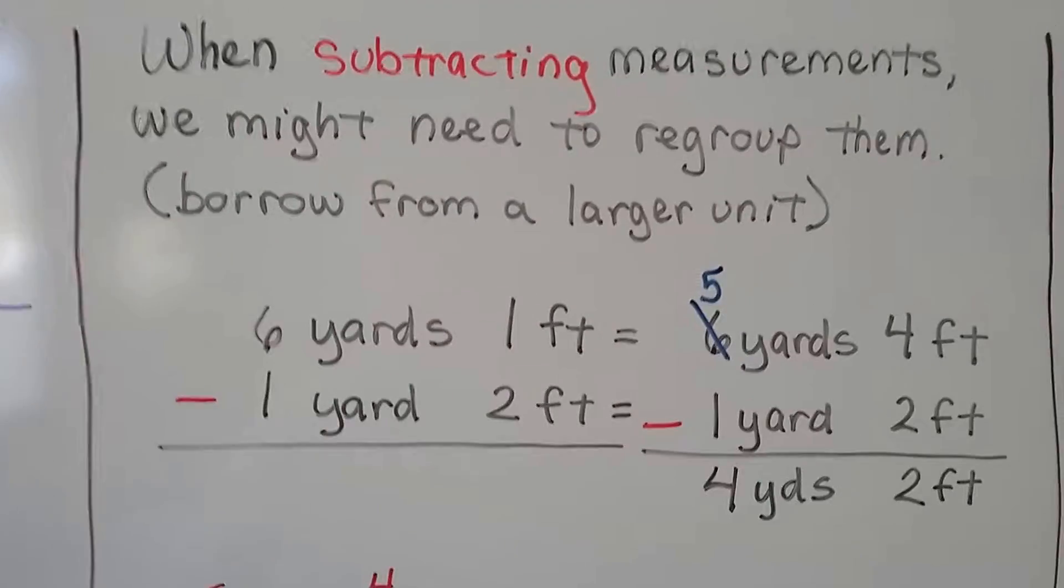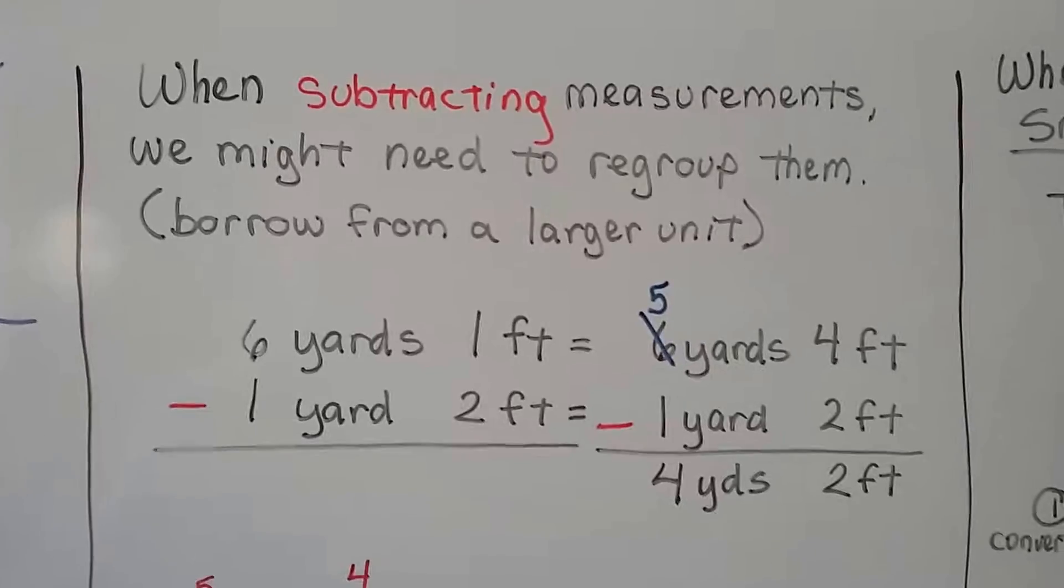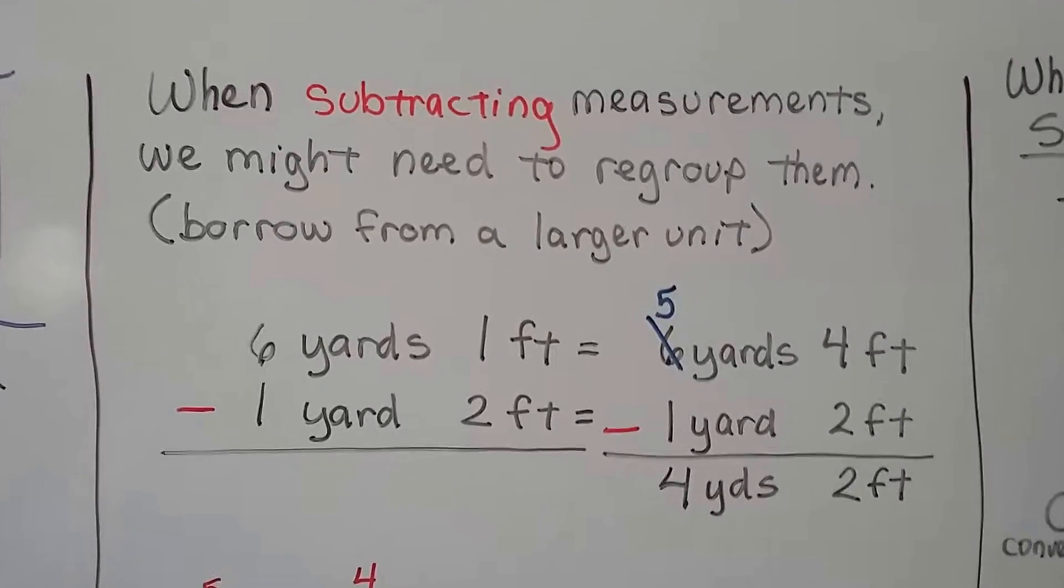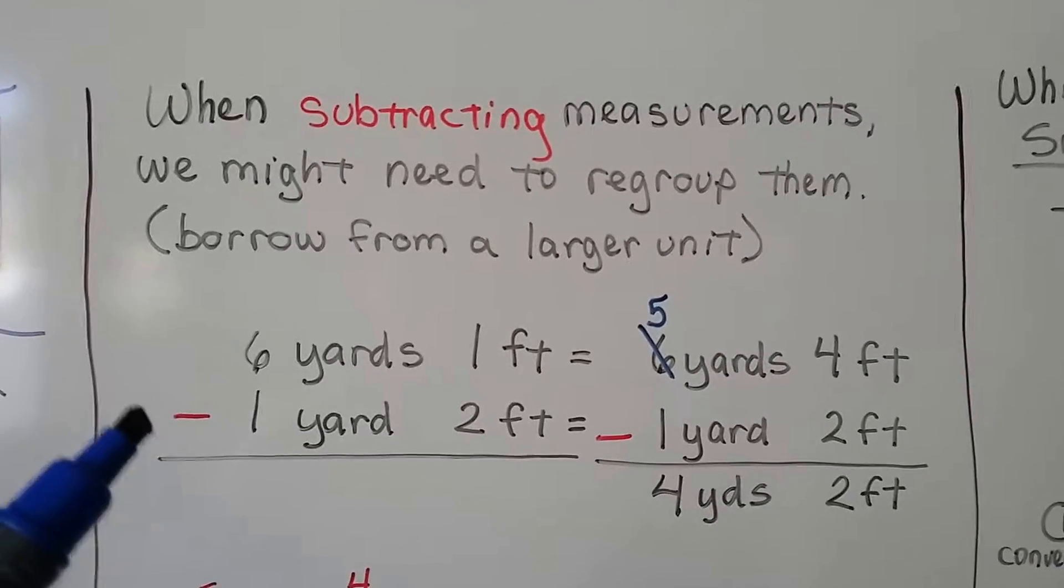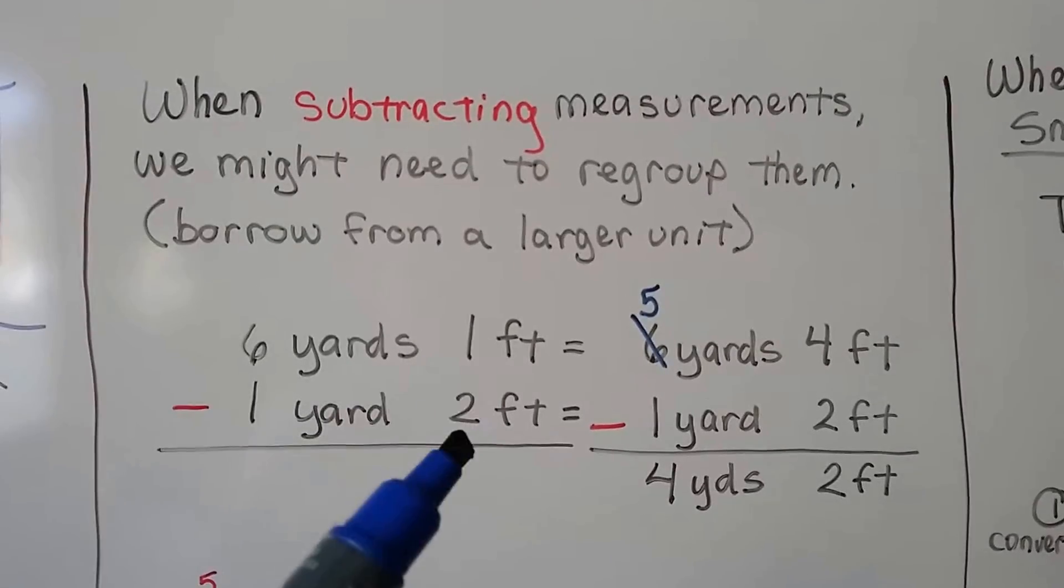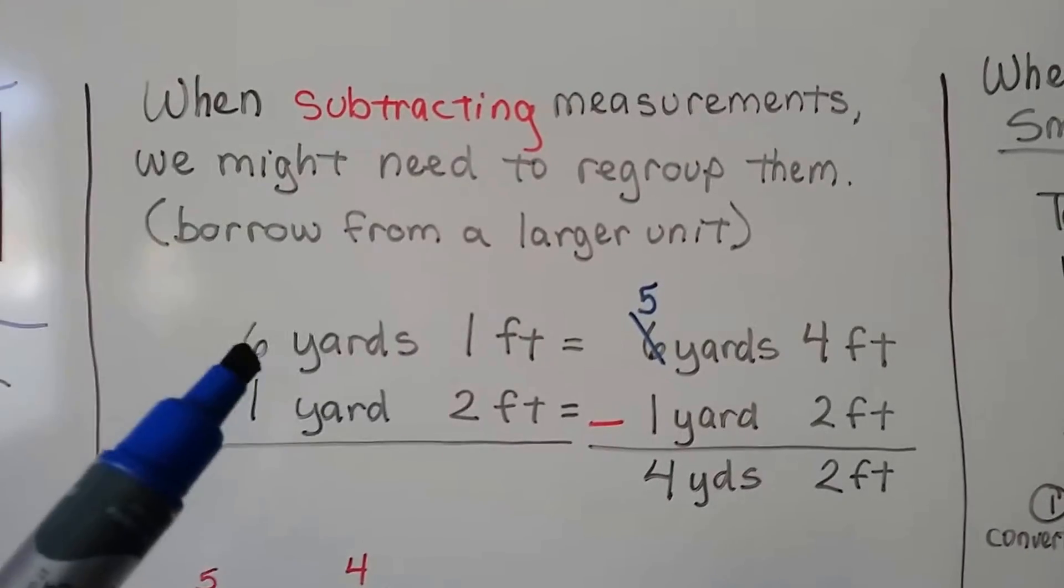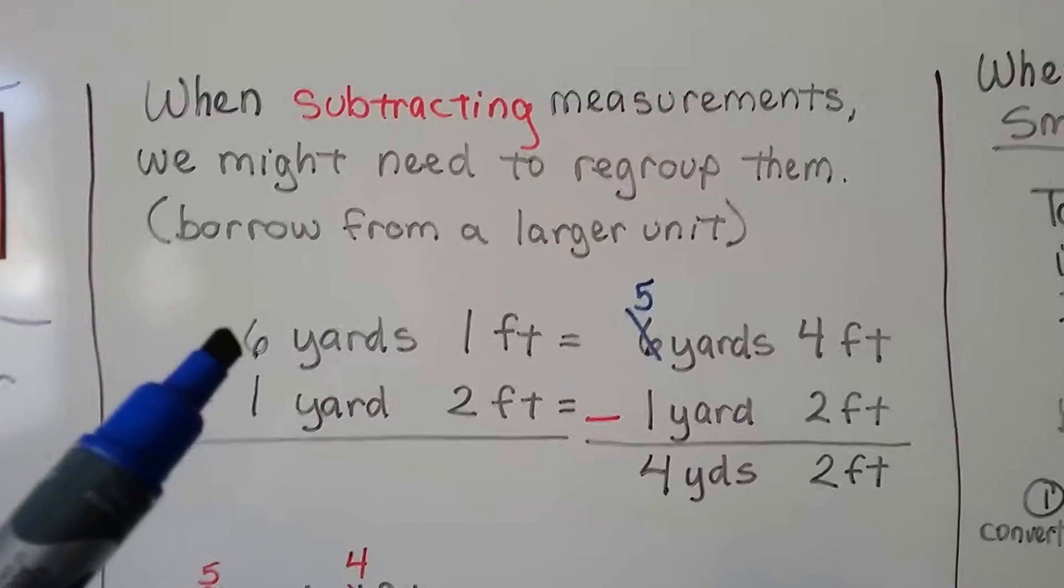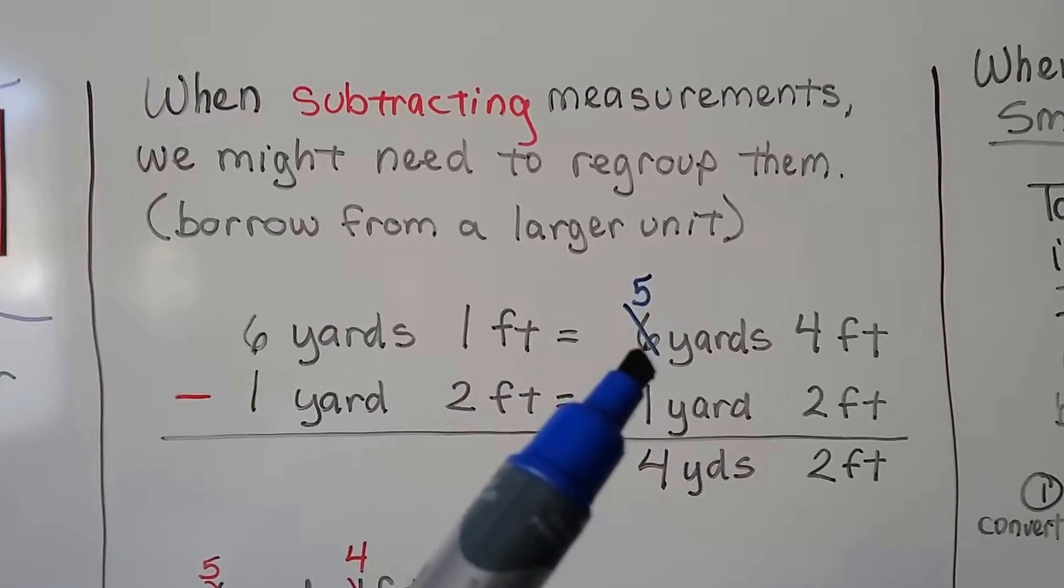When subtracting measurements, we might need to regroup them first. You know, borrow from a larger unit. If we have 6 yards and 1 foot and we need to take away 1 yard 2 feet, we can't take the 2 feet from the 1 foot,